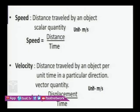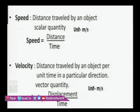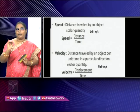Speed is the distance traveled by an object per unit time. Speed equals distance divided by time. It is a scalar quantity and its SI unit is meter per second. On the other hand, velocity is the distance traveled by the object per unit time in a particular direction. Velocity equals displacement divided by time. Velocity is a vector quantity, and its SI unit is also meter per second.